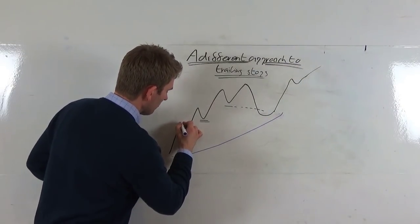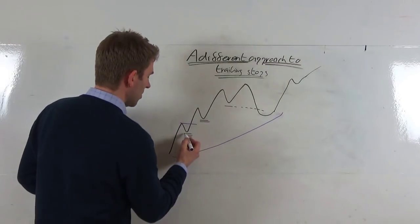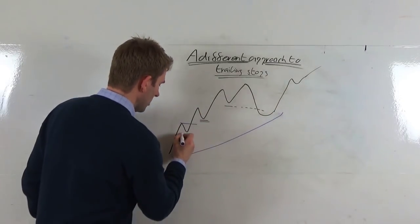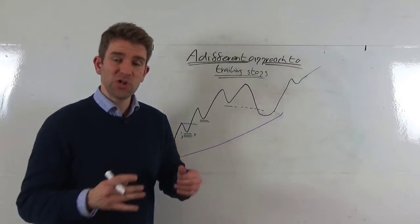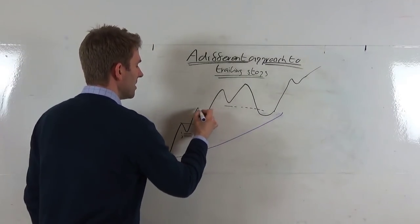it to break out through that high, and then we put our stop under that prior low. But we split it into three orders - this is the twist. We add one, two, three different orders, so we split our position into three different scales. Market pushes on, pulls back again, breaks through the high.